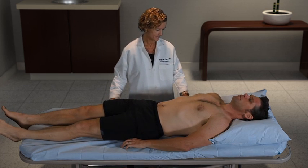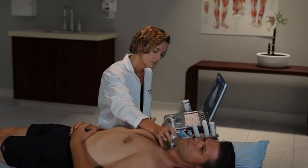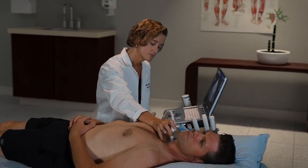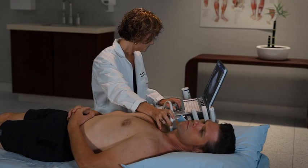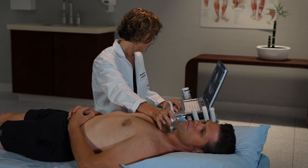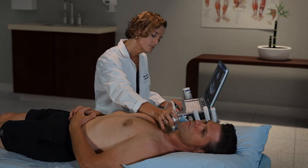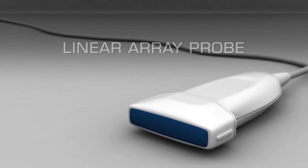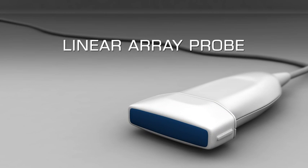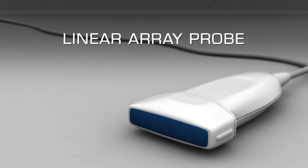The patient should be lying supine on the examination table. The table can be raised to a comfortable level if needed. A pillow can be placed under the shoulder to provide better access to the thyroid gland by extending the neck.